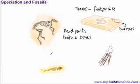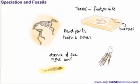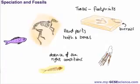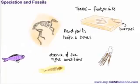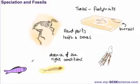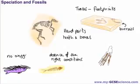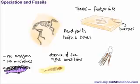Another way fossils form is through the absence of the right conditions needed to decay. For example, an ancient fish that lived millions of years ago dies and sinks to the bottom of the ocean. If it doesn't get eaten by a predator and it quickly gets covered with silt or mud, no oxygen can get in, maybe no microbes either. Because of that, the decay process is either stopped or slowed enough for the actual remains to turn into a fossil.